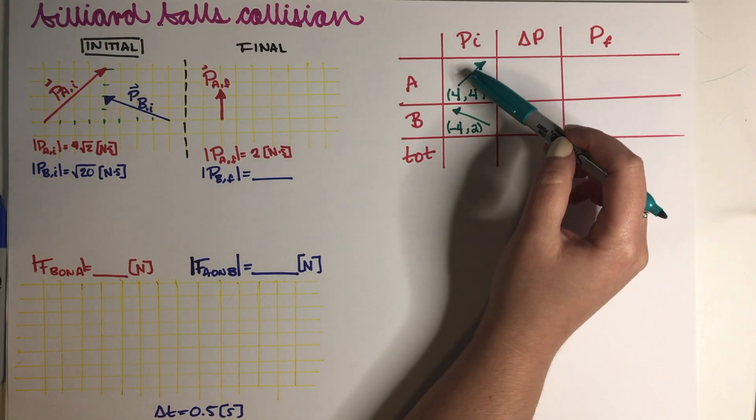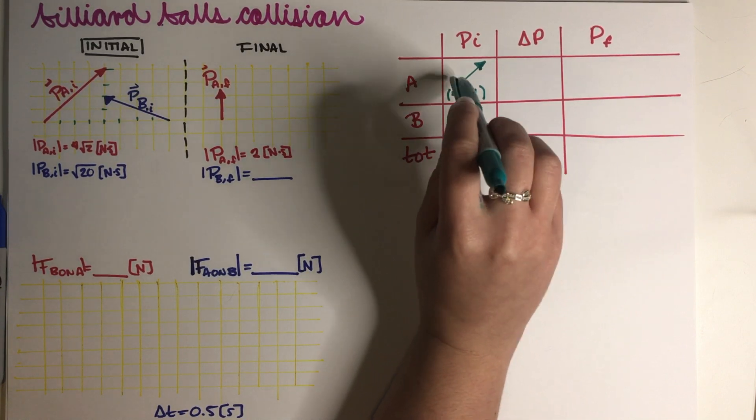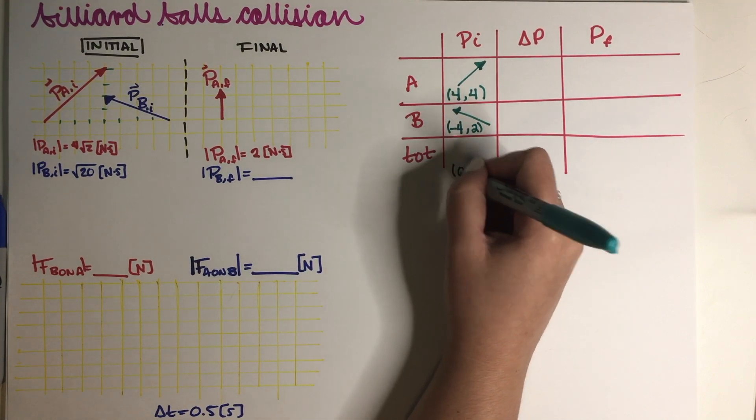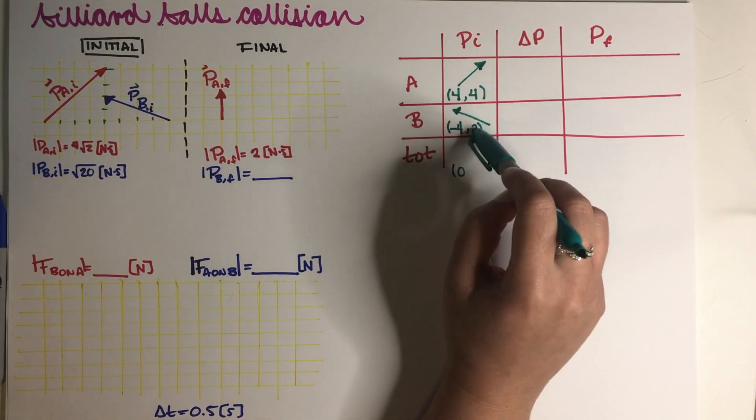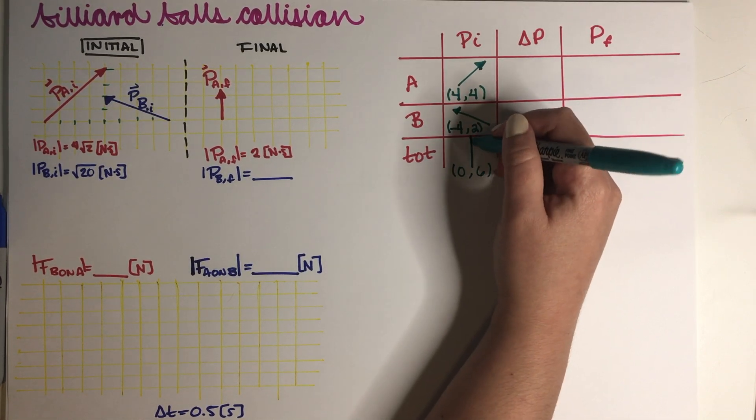Now I need to add this up. And that will be our total initial momentum. 4 plus minus 4 is going to be equal to 0. And 4 plus 2 is going to be equal to 6. So this is just going to be a total momentum of 6 going up.